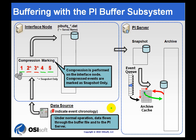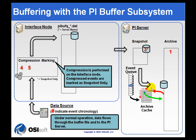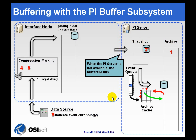We are still sitting on the Interface Node. Normally through buffering, data is placed in the queue, and just as quickly as it gets in there, we send it over to the PI Server. Once it gets to the PI Server, it goes into the snapshot, from there into the Event Queue, and from the Event Queue we send it to the Archive Cache. From the cache, we write it to disk quickly and keep a copy in the cache. That's what happens with data collection with buffering turned on and everything working fine.